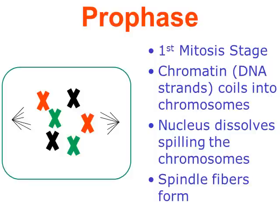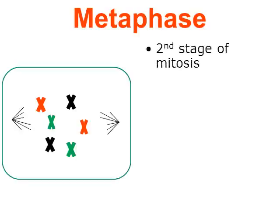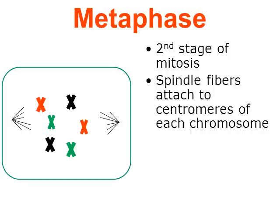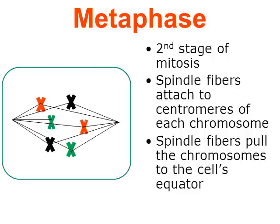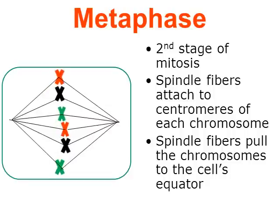Let's move on to the next stage called metaphase — the second stage of mitosis. There's really one big characteristic event during metaphase. The spindle fibers are going to attach to the centromeres of each chromosome — there they go, attaching to the central location of the chromosomes. The main characteristic of metaphase is this: the spindle fibers are going to pull the chromosomes to the cell's equator. Watching the animation, those X-shaped objects are being pulled to the cell's equator — the equator is the central line, like the Earth has an equator. All the chromosomes are going to be lined up along the middle.